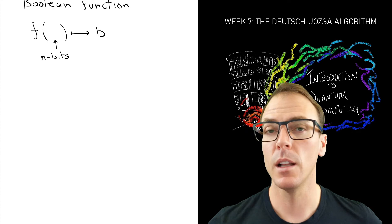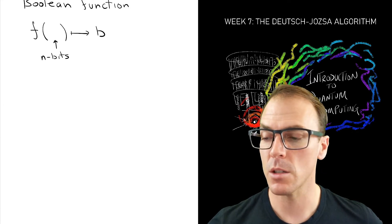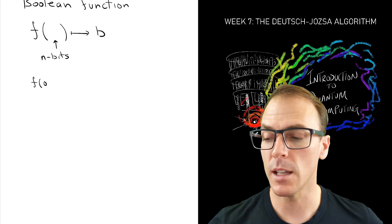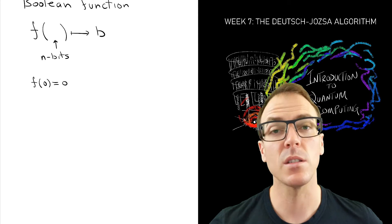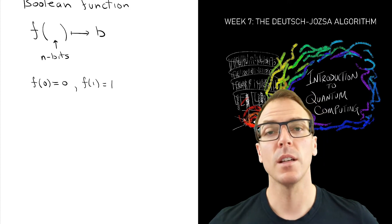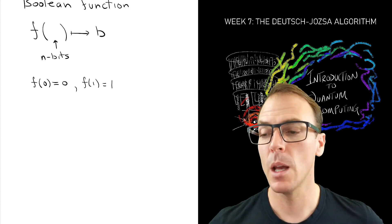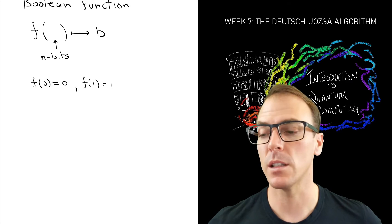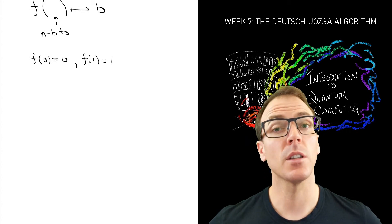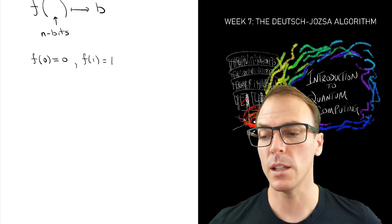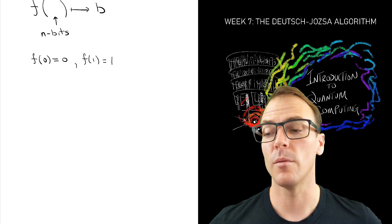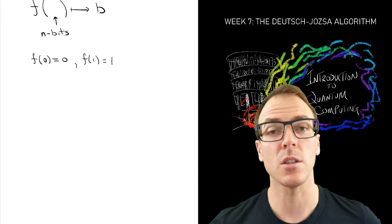So a one bit function might be the function that takes 0 and produces 0 and takes 1 and produces 1. So this is the do-nothing function. But it's a valid Boolean function because it takes as input a bit and produces a bit. How many such functions are there? Well, we can just count all the possibilities. Since the output is only two possibilities, for every possible input there's two possible outputs. So we can just list them all.